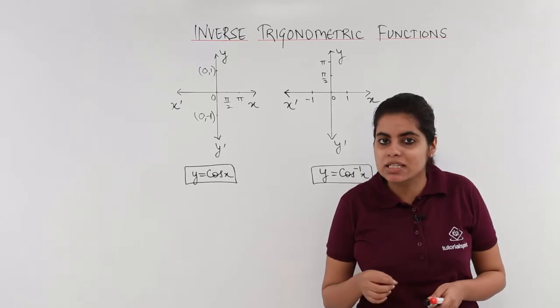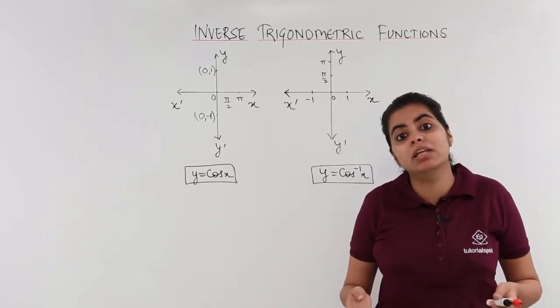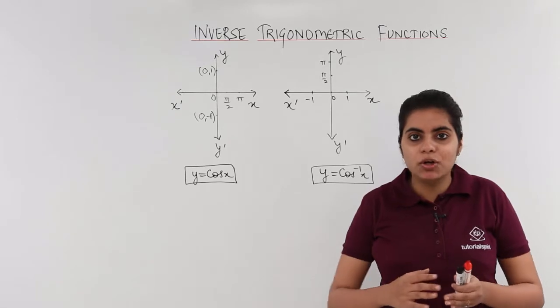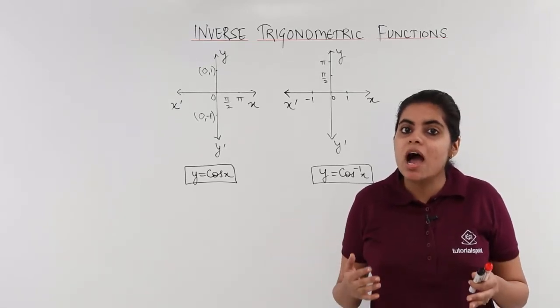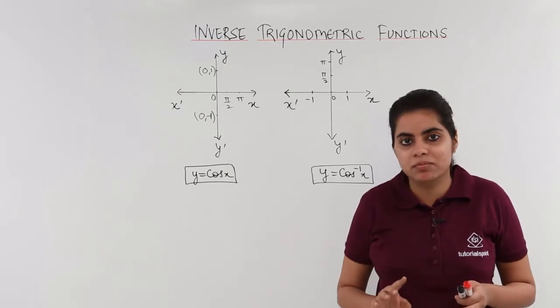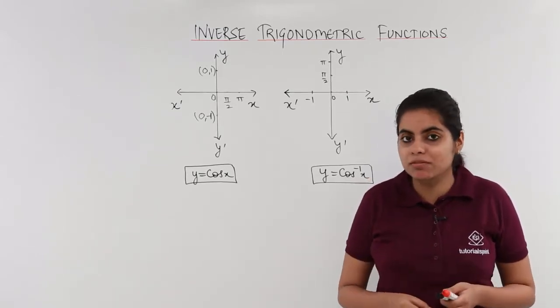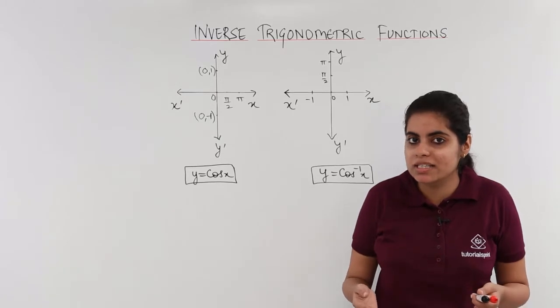Remember we studied that sin x, cos x these are many one functions. If we keep on drawing the graph of cos x we will find that for many values I obtain one value in the range so it becomes many one, but then the inverse doesn't exist.